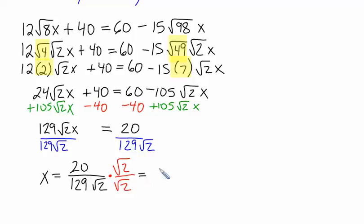In the top, it'll just be 20 radical 2. In the bottom, radical 2 times radical 2 is 2. And then we're going to do 129 times 2. It's 258.